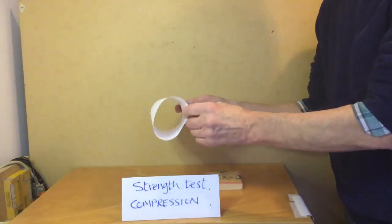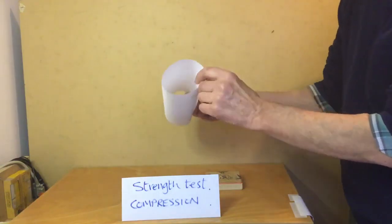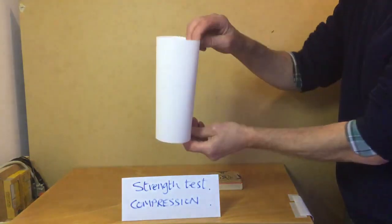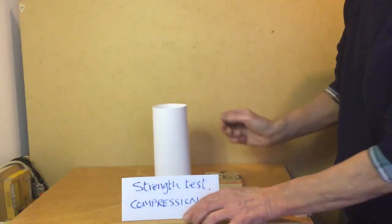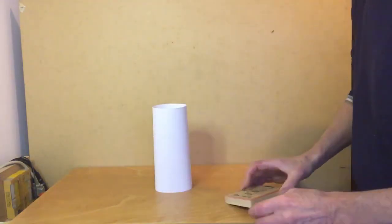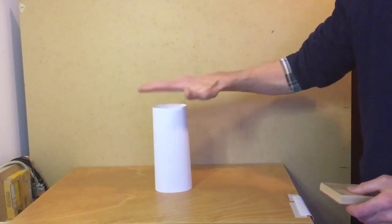This is a very simple strength test to test the compressive strength of a paper cylinder. We simply place the cylinder onto a flat surface and then take a series of masses and put them on top.